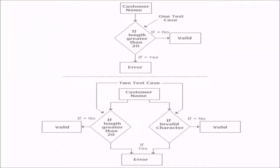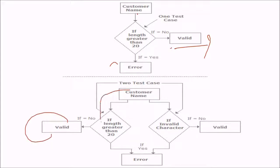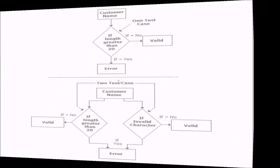For example, consider a customer name field: if length is greater than 20, error; otherwise valid — that is one test case. But for exactly the same thing, we can have two test cases: one for length greater than 20 giving an error, and another checking for invalid characters, using two test cases here.